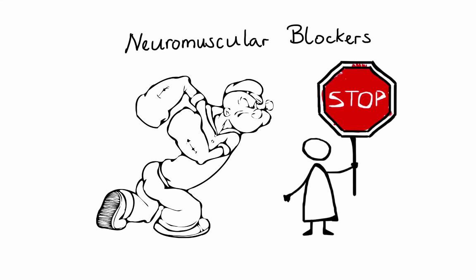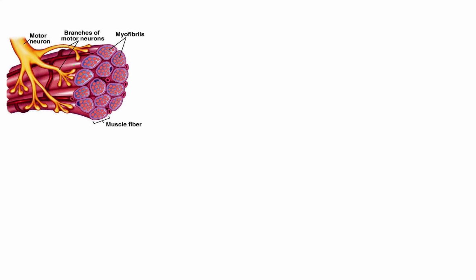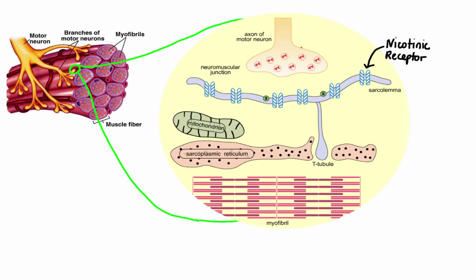Now let's talk about neuromuscular blockers. These agents block cholinergic transmission between motor nerve endings and nicotinic receptors on skeletal muscle. Zooming in on the neuromuscular junction, you can see nicotinic receptors to which acetylcholine binds and induces channel opening. Opening of these channels lets sodium ions enter the muscle fiber and trigger a muscular action potential, which travels along the sarcolemma and through the T-tubule system into the fiber. The arrival of the action potential causes calcium to be released from the sarcoplasmic reticulum, which leads to muscle contraction.